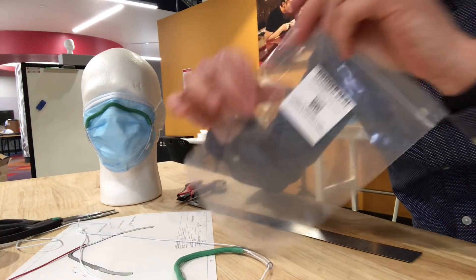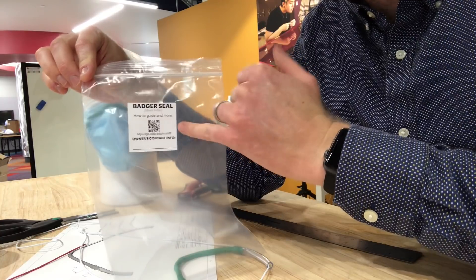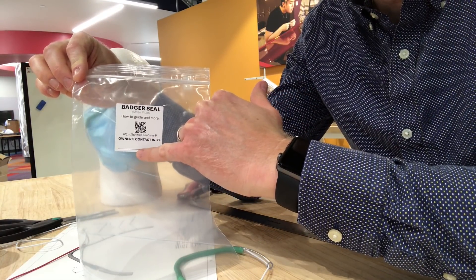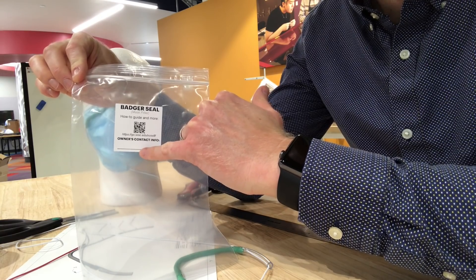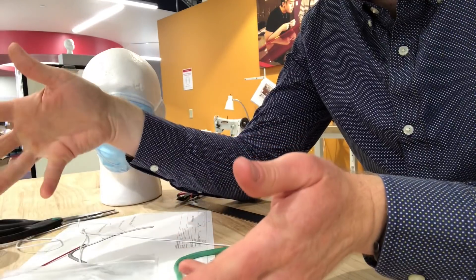The last step that we do is we put it in a little plastic bag with a sticker on it that has a QR code to our website with more information, the name of it, and then the person that is using this fitter that it belongs to can put their name there.